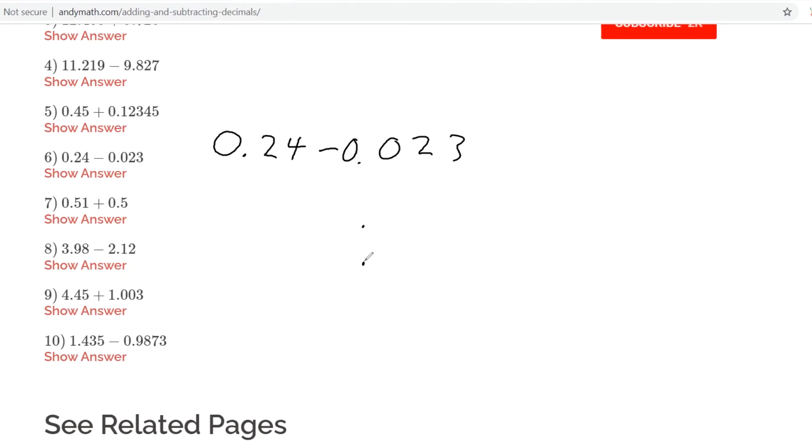The way you do these, you want to line up the decimal point and stack them. So it's gonna be 0.24 minus 0.023.